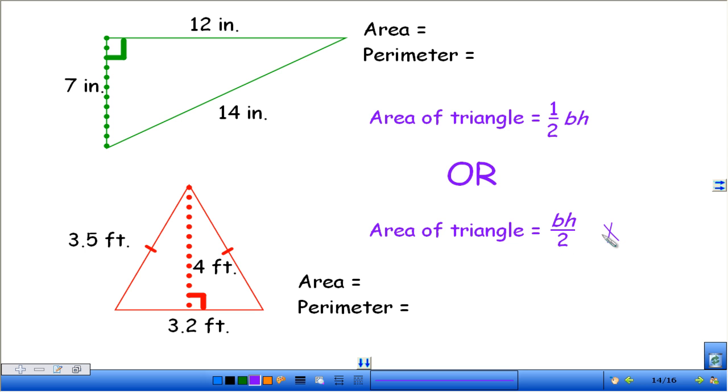It is the same thing as saying do your base times height and then divide it by two. Taking half of a number, so multiplying by one half, is the same thing as dividing by two. So this is probably the one that you're going to be more comfortable with because there's no fractions in there. You just have to divide at the end.